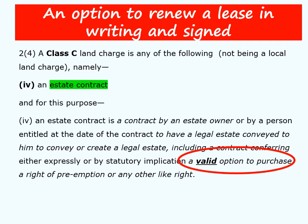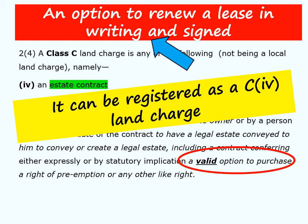What about an option to renew a lease? This is where a tenant has the right in the lease to require the landlord to grant a further lease when the current one ends — the tenant's choice as to whether to exercise this right. The section states it must be a valid contract, meaning the contract must satisfy the requirements for a valid contract in relation to land: it must be in writing and signed. Applying that rule: it is in writing and signed, so we can conclude it can be registered as a C4 land charge. If an option to renew is in the original lease itself, the lease will usually be by deed — which is in writing and signed — so it will be a valid contract.